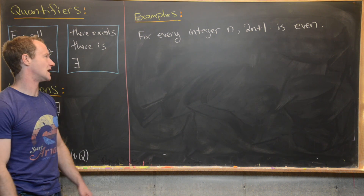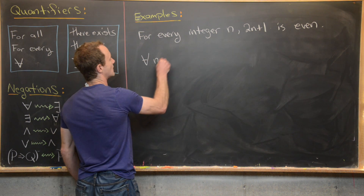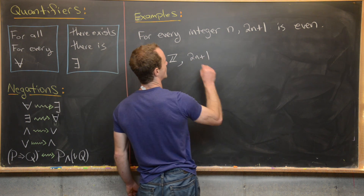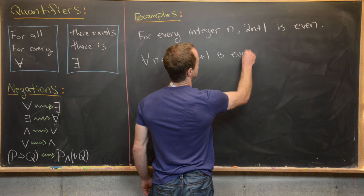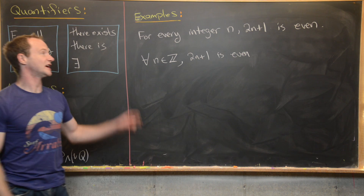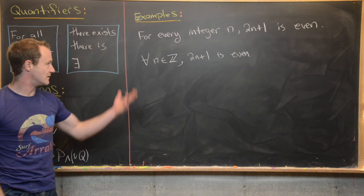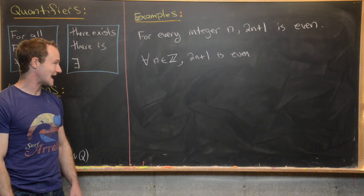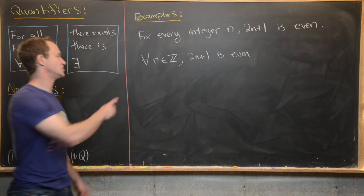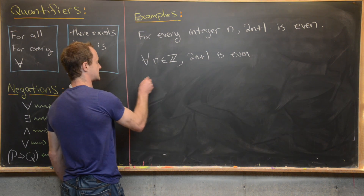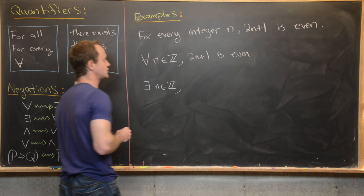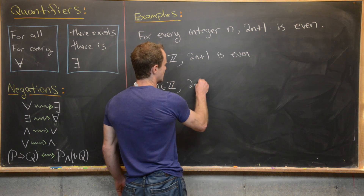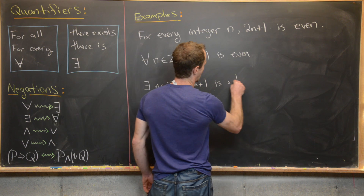Let's turn this into symbolic logic. This would say: for all n in the integers, 2n+1 is even. Now let's negate this by changing the for all to there exists. So: there exists an integer n such that 2n+1 is odd.